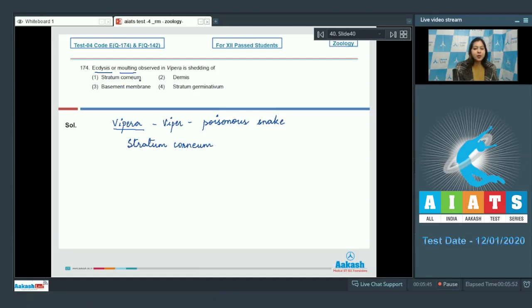Let us look at the options. Stratum corneum this is correct. Dermis is incorrect. Basement membrane is the membrane which separates the epithelium from connective tissue. This is incorrect. Number 4 is stratum germinativum. This is also incorrect as stratum germinativum is the underlying layer of stratum corneum and provides new cells which are regularly formed.